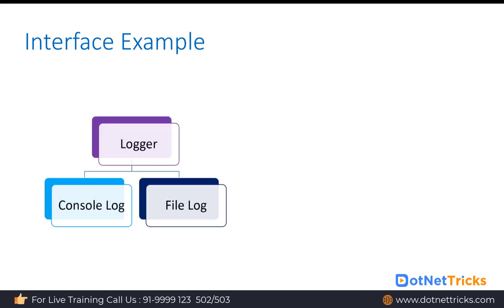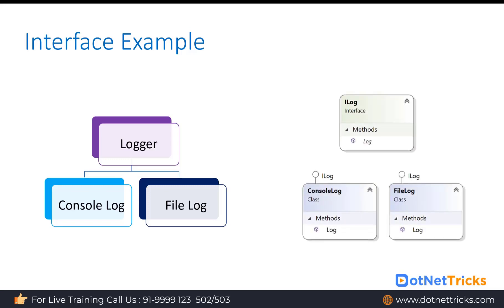Let's understand interface with an example. Say there is a requirement to log user activity. We have a logger and we can have a console log and a file log — either we log the activity to the console or to a file such as a text file. We can create an ILog interface and declare a log method, which will have a different implementation for logging to the console and a different implementation for logging to a file. We have two classes — ConsoleLog and FileLog — both implementing the ILog interface.